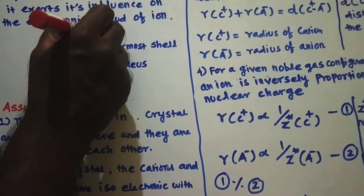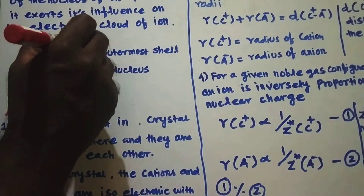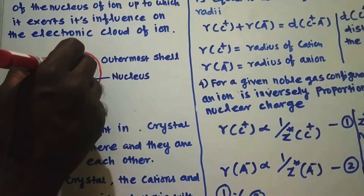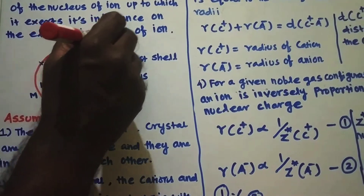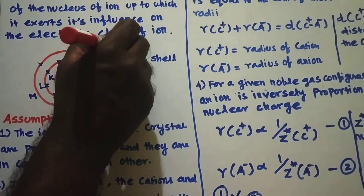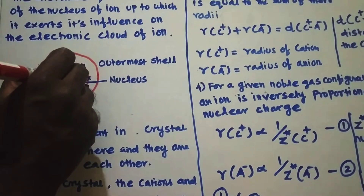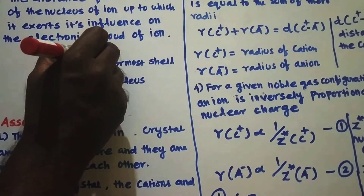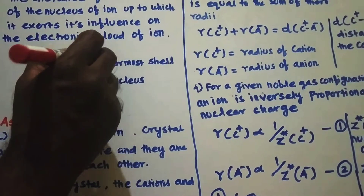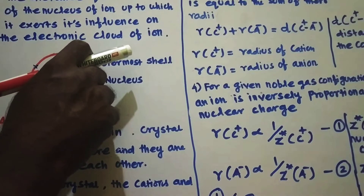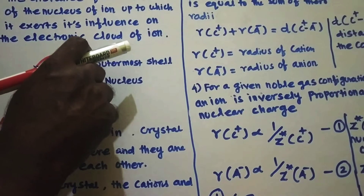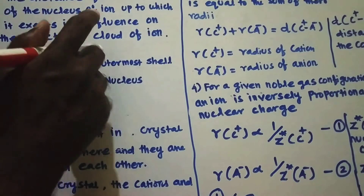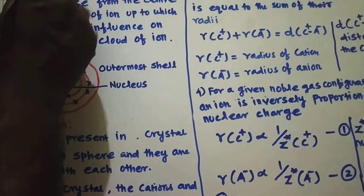Due to that, there is an influence of the nucleus on the outermost shell. So the distance between the center of the nucleus and the electrons present in the outermost orbital — that is called ionic radius.